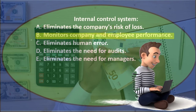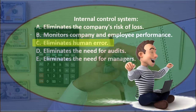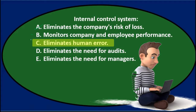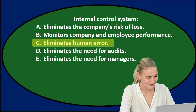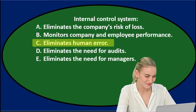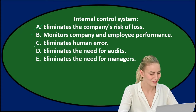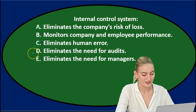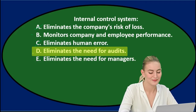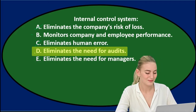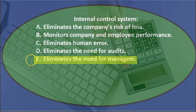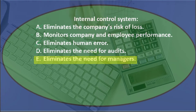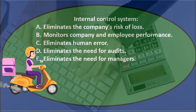B. Monitors company and employee performance — that could be an internal control, so we'll keep that for now. C. Eliminate human errors — again, that word 'eliminate' is the issue. It might reduce human errors greatly by having checks and balances and computer systems, but not eliminate. D. Eliminates the need for audits — it probably doesn't eliminate the need for audits; we might have a nicer audit with good internal controls, but the need isn't gone. E. Eliminates the need for managers — obviously managers are going to be part of the internal control system, not eliminated from the process.